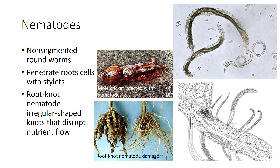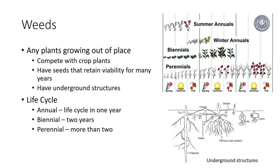Weeds are any plants growing out of place or any unwanted plants. They compete with crop plants for water, nutrients, and light, plus they harbor diseases and insects. Weeds tend to grow better than crop plants because they typically have characteristics that allow them to grow and survive under harsh conditions. They have seeds that retain viability for many years and can be dormant until an opportunity exists for success. A variety of weeds have underground structures such as roots, rhizomes, and others which are used for reproduction.